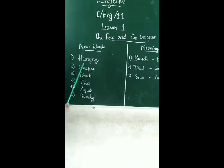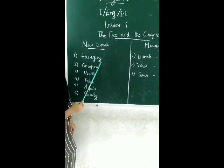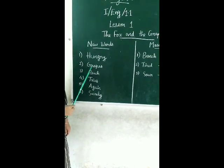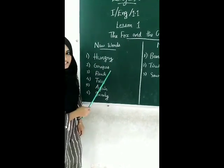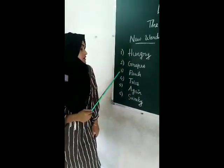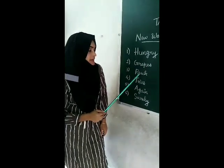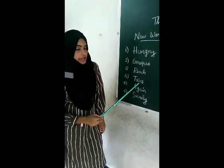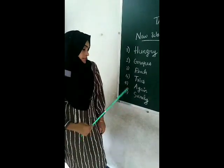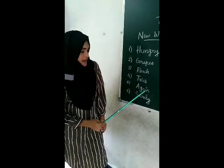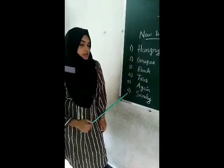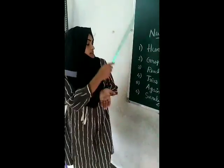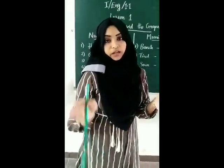First word: hungry. H-U-N-G-R-Y. Hungry means in need of food. Second word: grapes. G-R-A-P-E-S. Grapes — I already showed it. Third word: reach. R-E-A-C-H. Fourth word: tries. T-R-I-E-S. Fifth word: again. A-G-A-I-N. Sixth word: surely. S-U-R-E-L-Y. You must copy these six new words in your notebook in good handwriting.